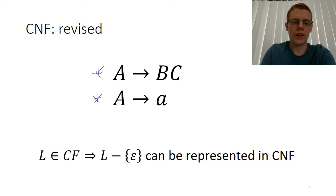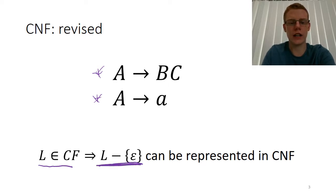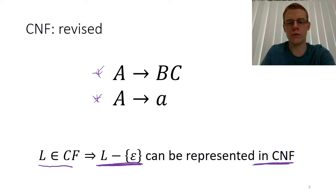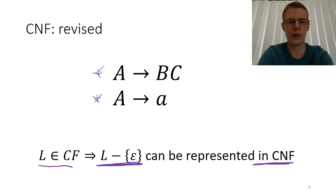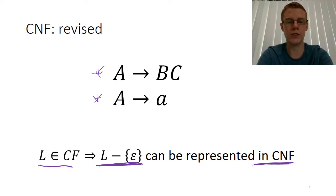We have a theorem that says that if a language is context-free, then that language — all of the strings in that language except for the empty string — can be generated by a context-free grammar that is in Chomsky normal form. So basically, if we take all of the context-free languages and remove epsilon, the empty string, from any of those languages, all of the remaining languages can be represented by grammars in Chomsky normal form.